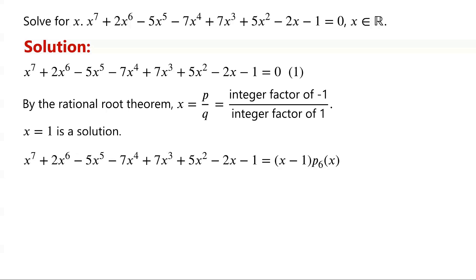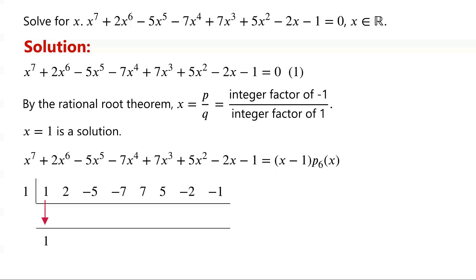P6 of x can be found using synthetic division. Set up the synthetic division by writing root 1, followed by the coefficients: 1, 2, negative 5, negative 7, 7, 5, negative 2, negative 1. Bring down the leading coefficient 1. Multiply the root 1 by the brought down number 1, right under the next coefficient. Add vertically: 2 plus 1 equals 3. Then repeat the process. Multiply the root 1 by 3, which is 3. Negative 5 plus 3 is equal to negative 2.